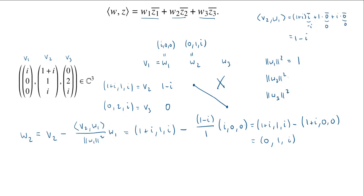Let's compute the square of the norm. 1 is 1 away, i is 1 away, so 1 squared plus 1 squared is 2. Now we can compute the last inner product we need, V3 with W2. 0 times 0 bar is 0, 2 times 1 bar is 2, and i times i bar is 1. So 2 plus 1 is 3.